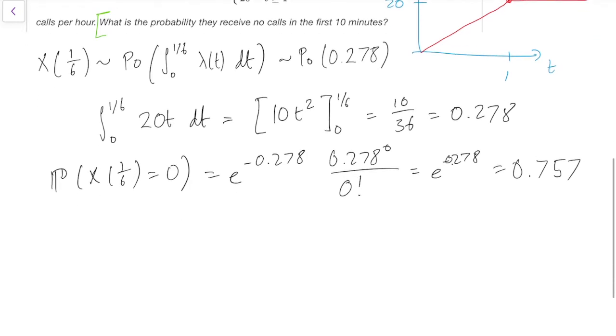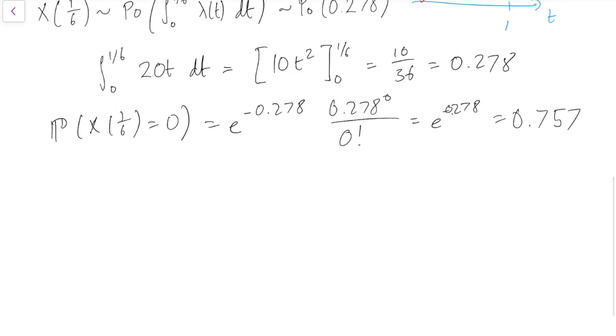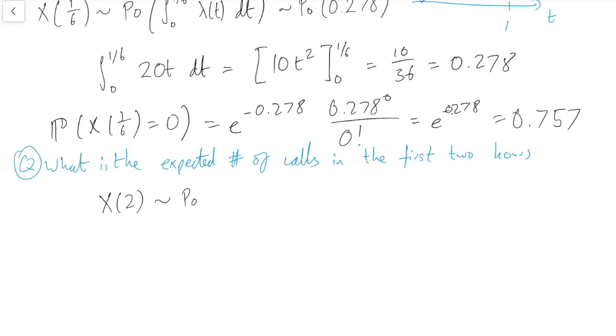That was a good warm-up. Let's try one more example while we're here. What is the expected number of calls in the first two hours? Well, again, the number of calls in the first two hours is X of 2, and that's Poisson with parameter the integral from 0 to 2 of lambda of t dt.